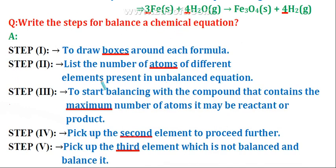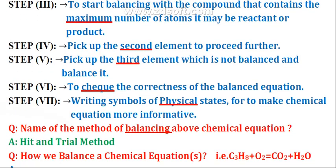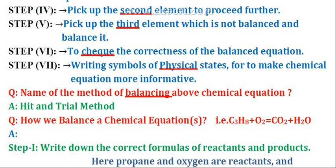When oxygen and hydrogen are attached to a particular element, we repeat the balancing steps. Step one: draw boxes around each formula. Step two: list the number of atoms of different elements present in the unbalanced equation. Step three: start balancing with the compound that contains the maximum number of atoms. Step four: pick up the second element to proceed further. Step five: pick up the third element and balance it. Step six: check correctness. Step seven: write the symbol of physical state to make the equation more informative.